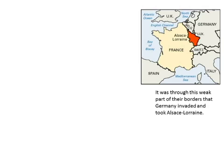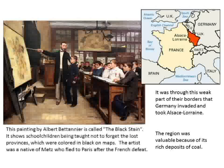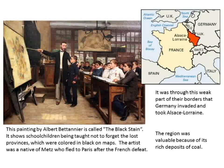Germany took Alsace-Lorraine from France. Alsace-Lorraine - it's actually two different provinces. This region was valuable because of the rich deposits of coal. And just as today much of our fighting is over oil, the source of our energy - back in this day, the source of energy was coal. Coal was how you fueled your industry. In this painting by Albert Bétanier, called The Black Stain, it shows school children being taught not to forget the lost provinces, which were colored black on the map.